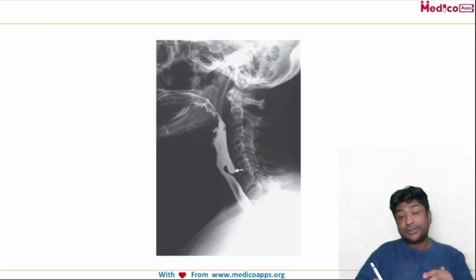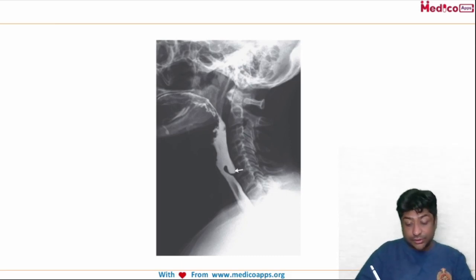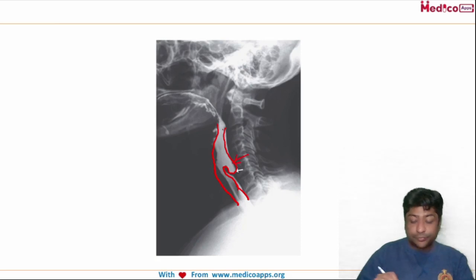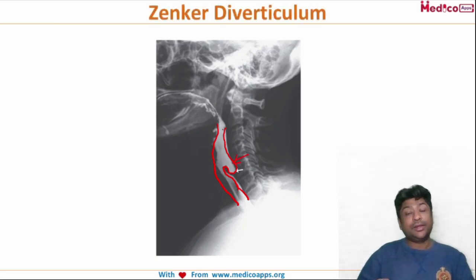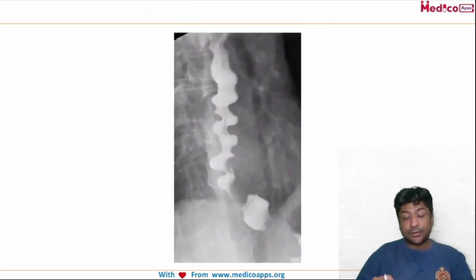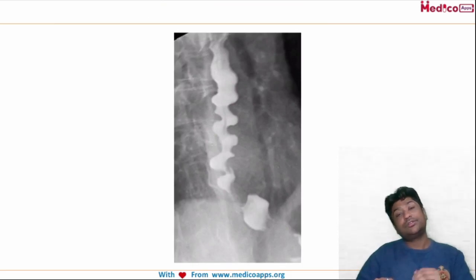For an older patient, you would want to look out for carcinoma esophagus, but if you see this already marked — you can see this diverticulum here — this is the esophagus and there is a diverticulum. So this is a barium swallow radiograph of Zenker's diverticulum.